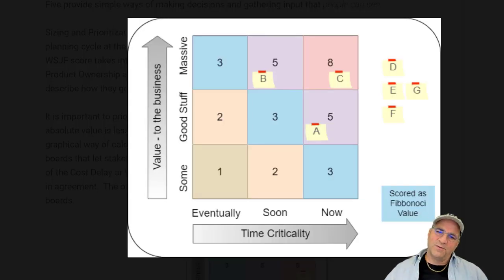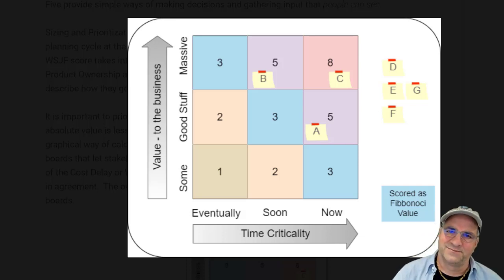So again, the whole point here is to have a graphical way that four or five people can sit in a room, or however many, and they don't have to argue about the number. What they're going to argue about is, is this thing more important than that thing? So in this case, I've got my backlog's got seven items in it. But I'm only going to work on three, because that's all we could get done today. And so what's the value to the business, and what's the time criticality? And so time criticality could be date ranges. It could be one to three months, three to six months, six to nine months. It could be, in this case I just did eventually, soon, and now, like right now. Some people put right now.